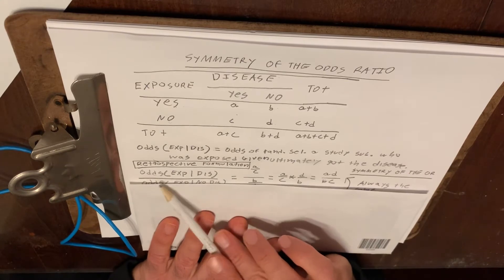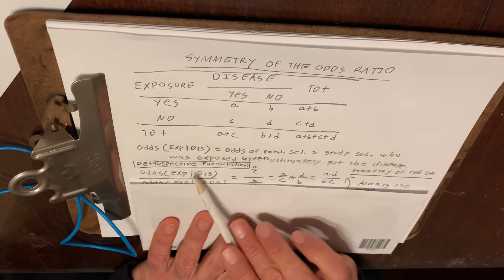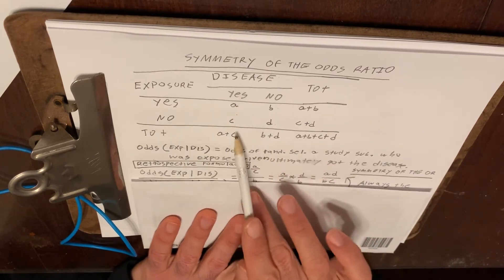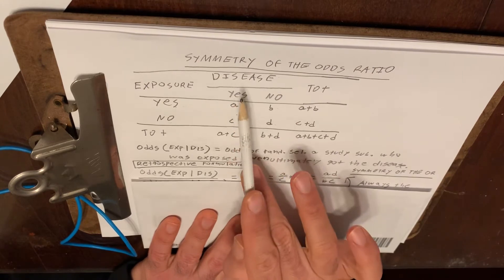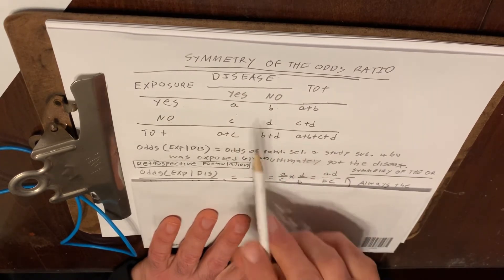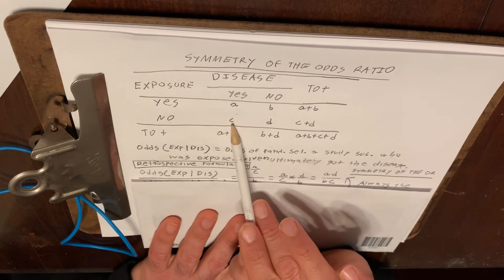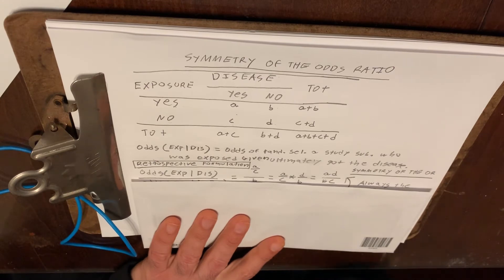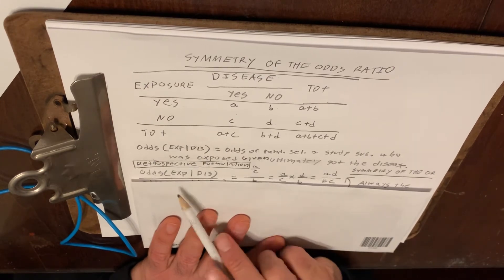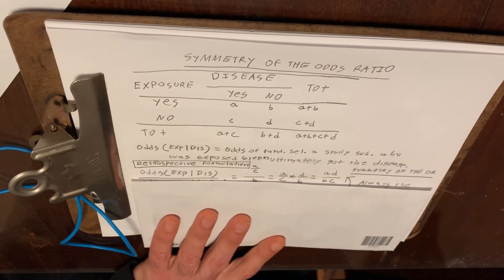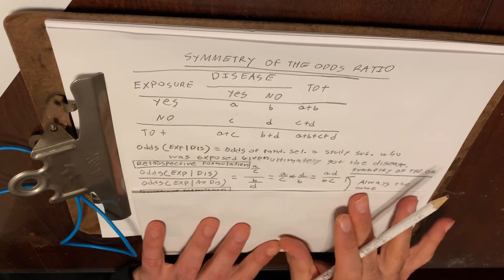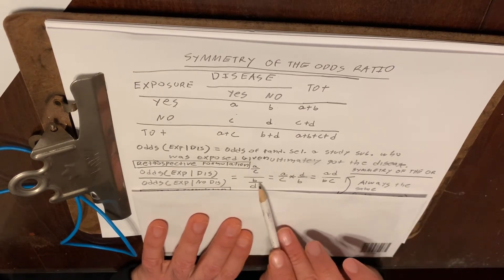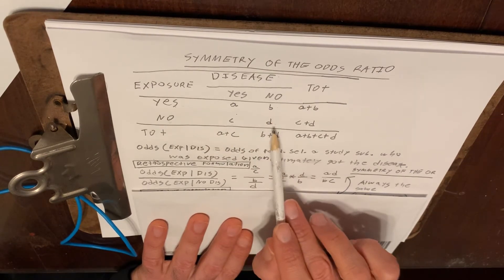So let's look at the odds of randomly selecting a study subject who was exposed, given that he or she got the disease. Since we're conditioning on having the disease, we're only looking at the disease-yes column. The odds of this is A to C. Compare that to the odds of randomly selecting a study subject who was exposed, given that they never got the disease — that would be B to D.